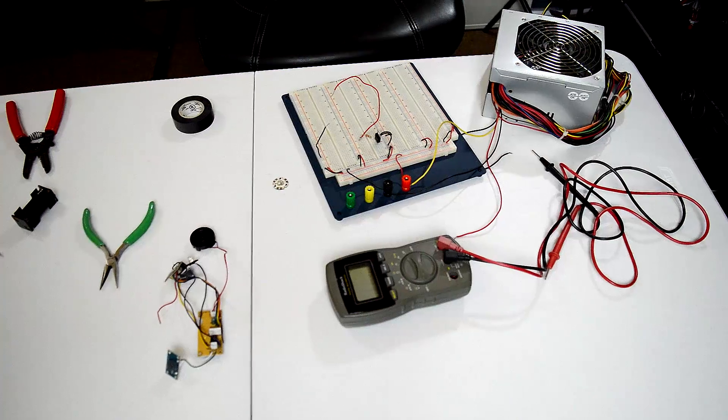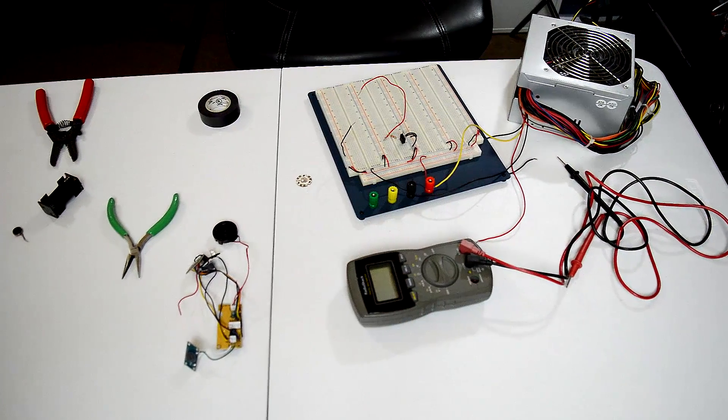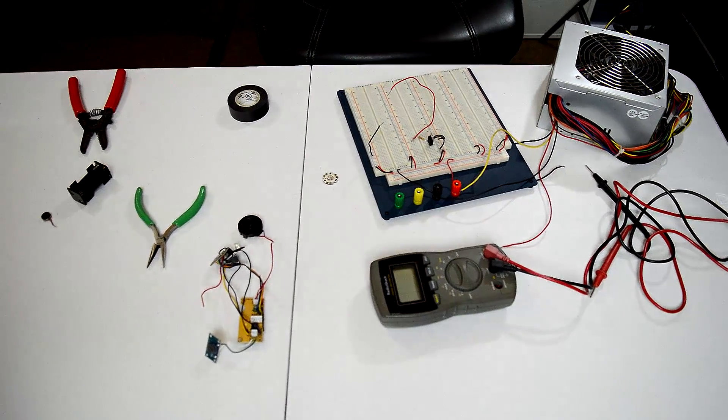This is part two of the custom lightsaber build, where we're going to take a look at what electronics are actually going into this lightsaber. We're going to be using a custom RGB LED, and it's going to be red - an awesome dark side lightsaber. We're going to show you all the electronics right now.